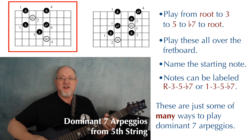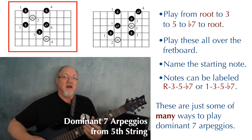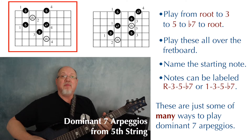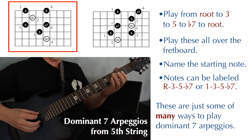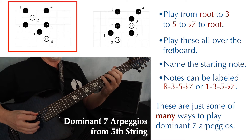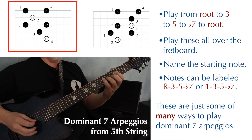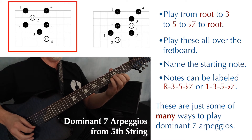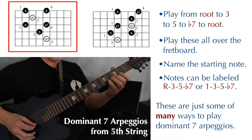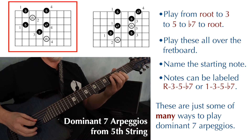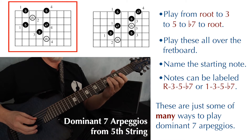Now let's take a look at some dominant seven arpeggios starting on the fifth string. These are all gonna be D seven arpeggios because I'm gonna be starting on the fifth string, fifth fret — but again, practice these arpeggios all over the fretboard. Here's a dominant seven arpeggio starting on the fifth string with your fourth finger. That'll be finger four, three, one, four, two, one, four, and back: one, two, four, one, three, and four.